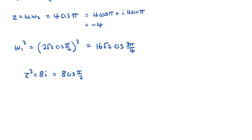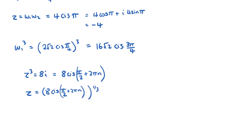To take the cube root using de Moivre's theorem, we write 8 cis(π/2 + 2πn) all to the power of one third. The 2πn term is included because the argument could be π/2 in any revolution, and this becomes very important when finding all roots of a complex number. There might be multiple solutions when we take the roots, so de Moivre's theorem is essential for both raising to a power and finding roots.